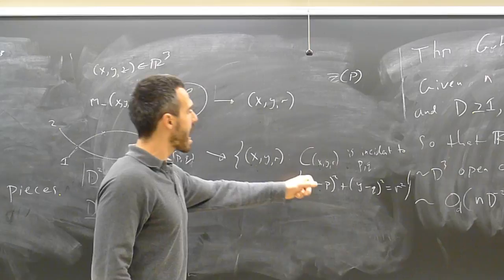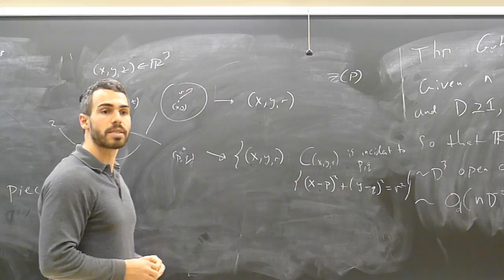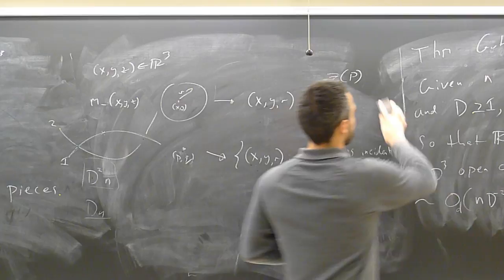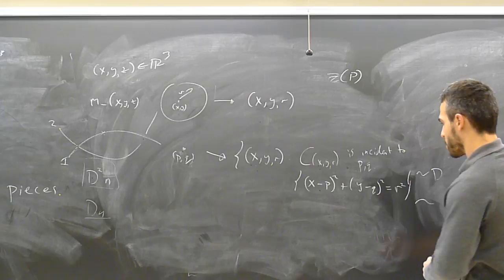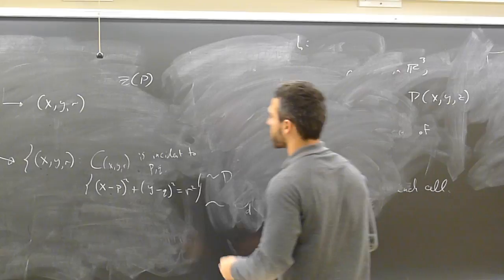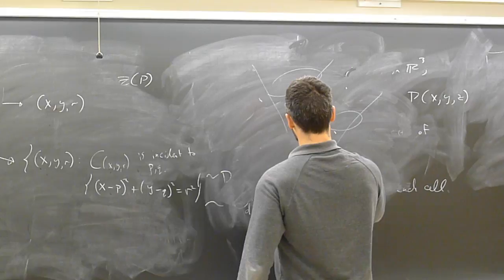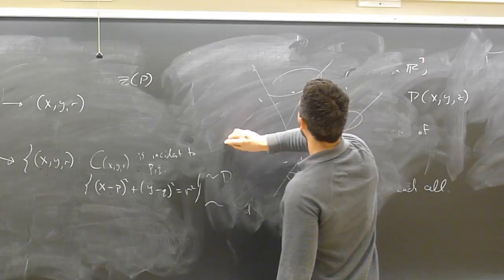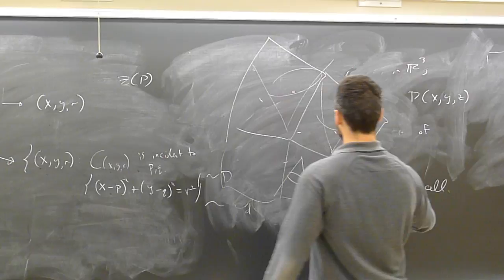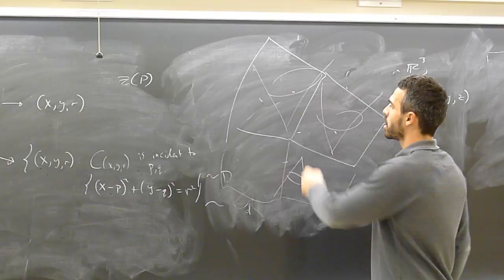So I started with m points and n circles in the plane. Now I have n points and m surfaces in R³. And I want to bound the number of incidences. And now we've reduced this to a problem that is fairly well understood. And so I can just draw a picture or two of what happens. So what do these surfaces look like? I think they should be cones, but I don't really care. That's a bunch of points. And a bunch of, I'm just going to draw all these cones.